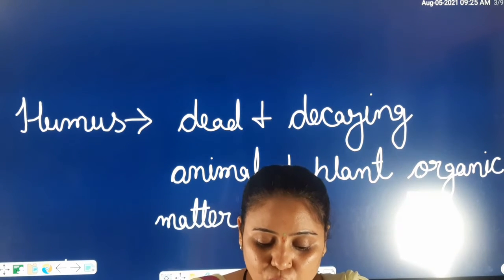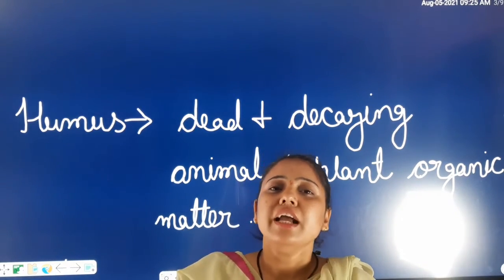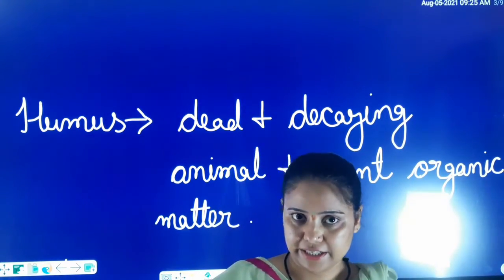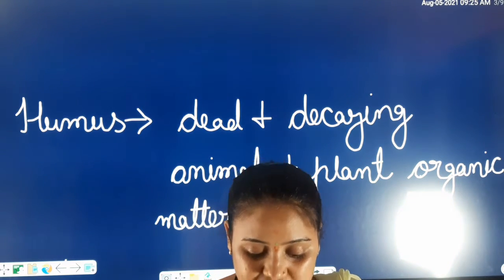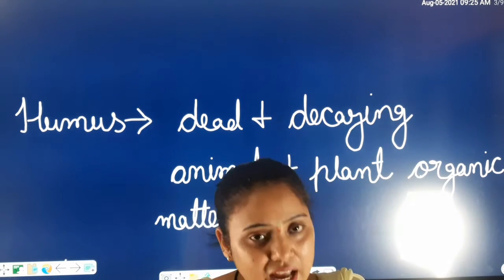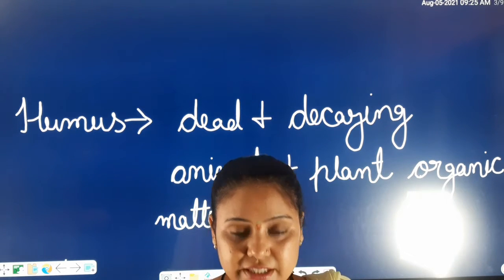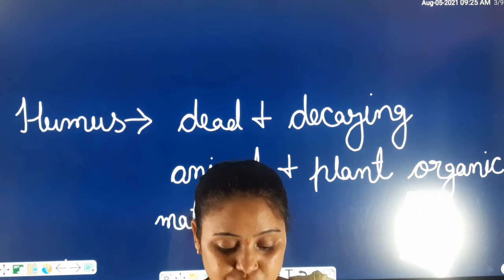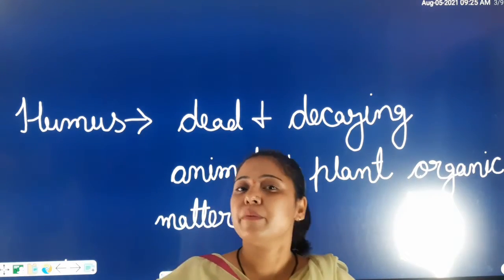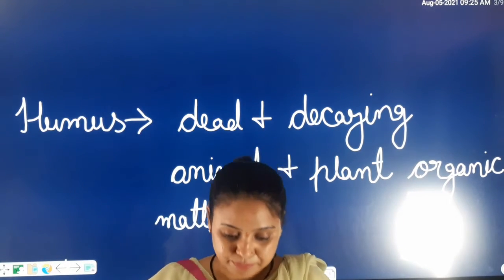The crust of the earth is home to millions of organisms — billions of animals. It provides shelter to the rest of the living organisms. You have microbes, plants, animals, and also human beings. Soil directly or indirectly supports the life of various living organisms. Humans use the soil to grow crops.